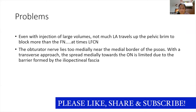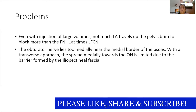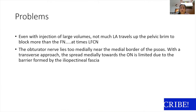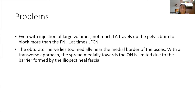The problem with the infrainguinal fascia iliaca block is that even with large volumes — recommended 30 to 40 ml of 0.2% ropivacaine or 0.25% bupivacaine — not much local anesthetic travels up the pelvic brim. It most consistently blocks the femoral nerve and the lateral femoral cutaneous nerve, but the obturator nerve lies too medially near the psoas border. Spread toward the obturator nerve is limited by the iliopectineal fascia acting as a barrier.